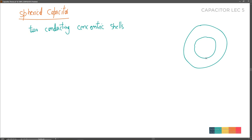We connect the inner plate to the positive terminal of the battery and the outer plate to the negative terminal. When connected, positive charge develops on the outside surface of the inner sphere. The magnitude of positive charge and negative charge is the same, so both concentric shells have equal and opposite charge.